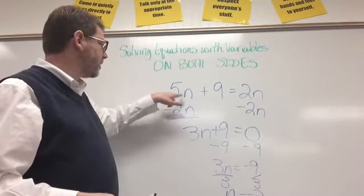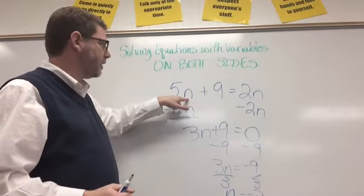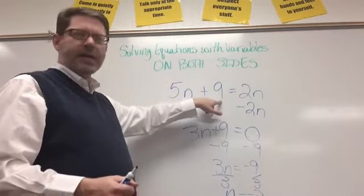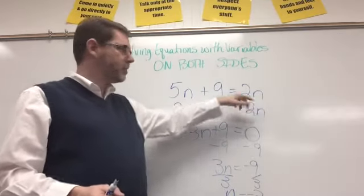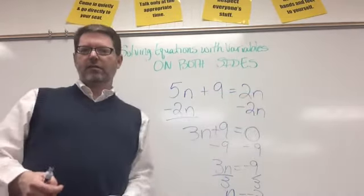And that's kind of under the screen but n equals negative 3. Let's plug that in. 5 times negative 3 is negative 15. Negative 15 plus 9 is negative 6. Well 2 times negative 3 is negative 6. So negative 6 equals negative 6. The answer is correct.